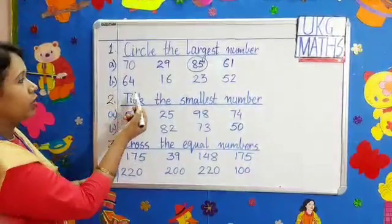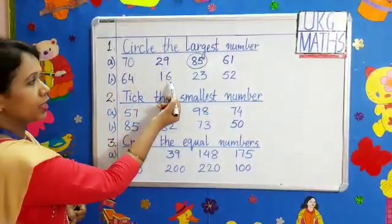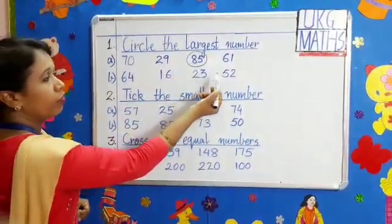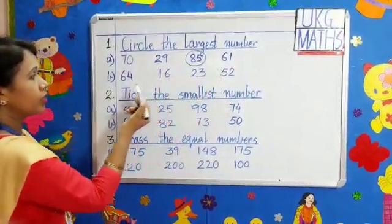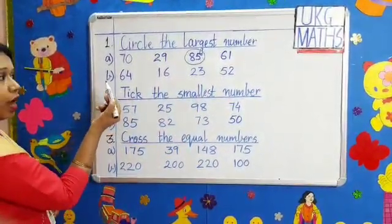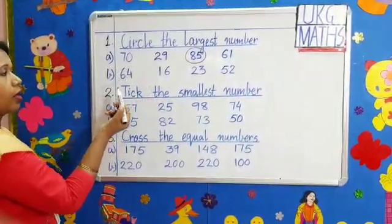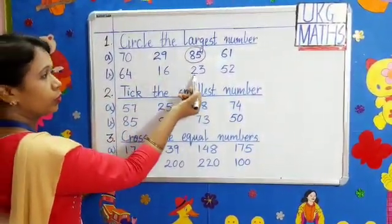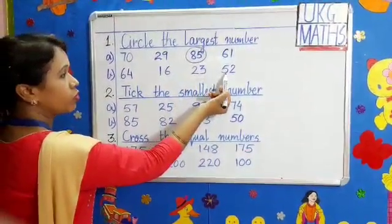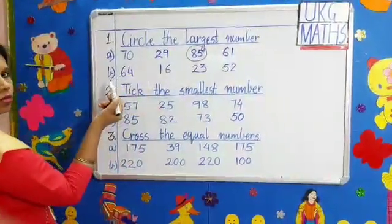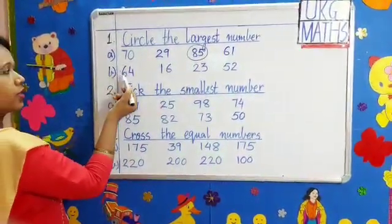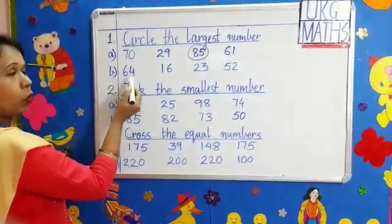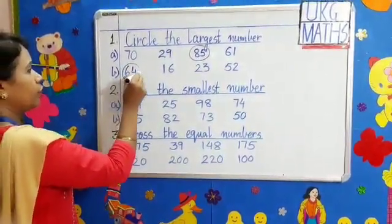Question B: 64, 16, 23, 52. Here also we will see like that. We have to identify the largest number. Here we have 6, here 1, here 2, and here 5. So which one is the largest? Very good. 6, that means 64. We will circle 64.